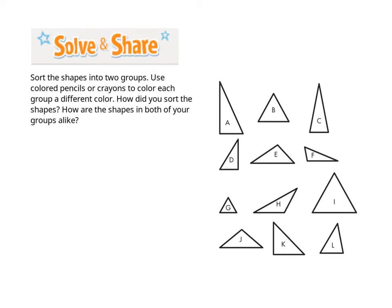What are you asked to do? Sort the shapes into two groups, explain how they are sorted, and tell how the shapes in both groups are alike. What tools can you use to help you? A ruler, the square corner of a piece of paper.